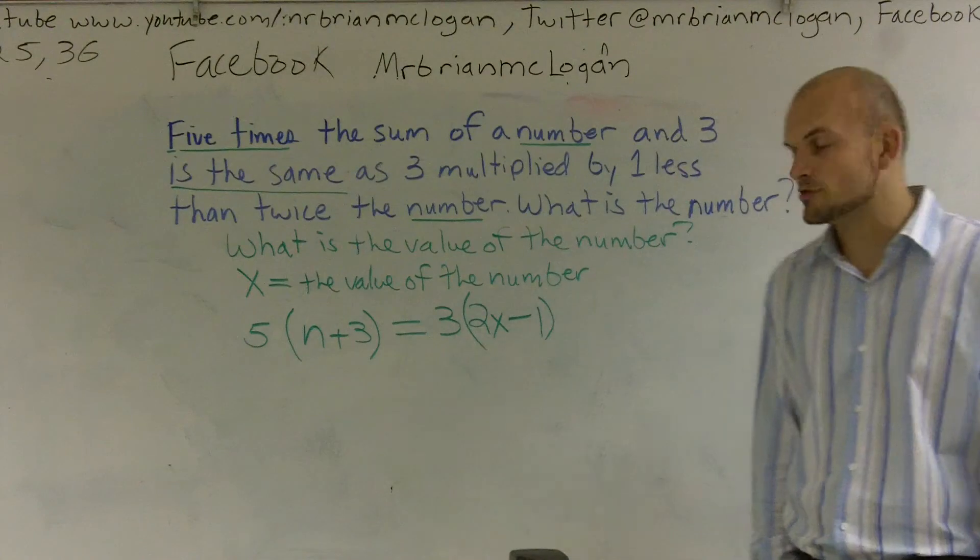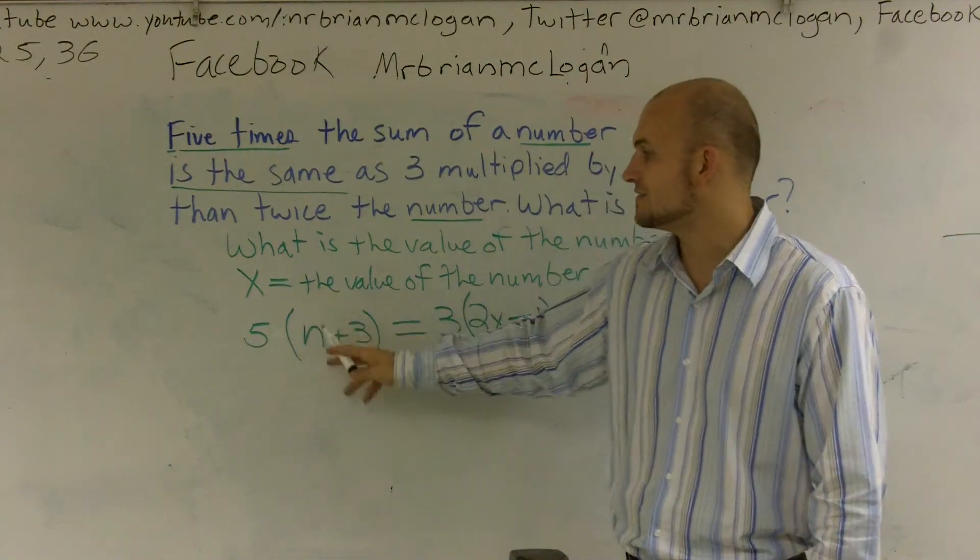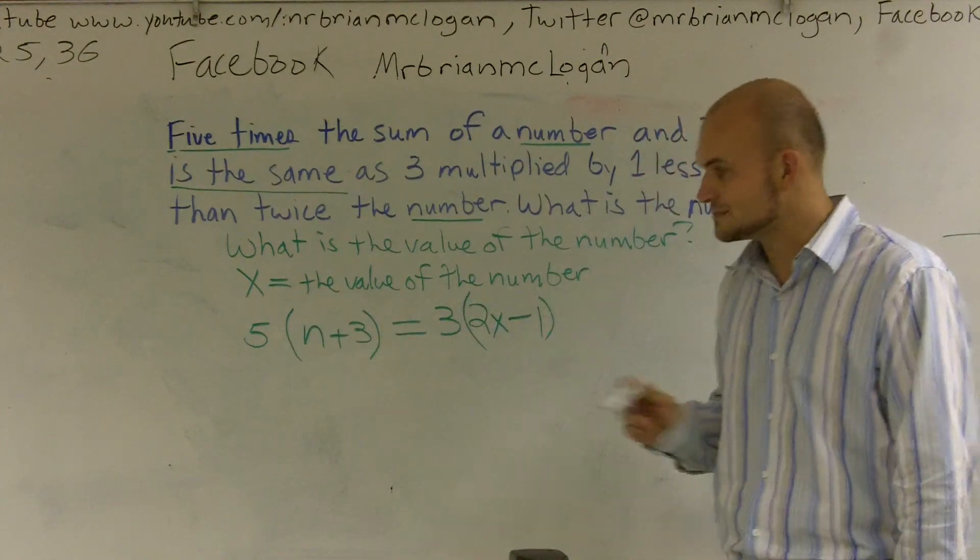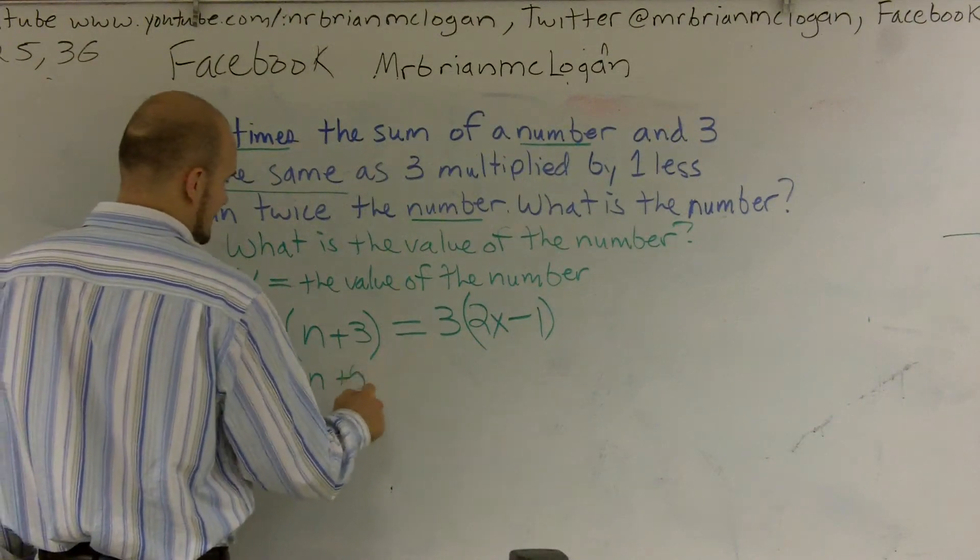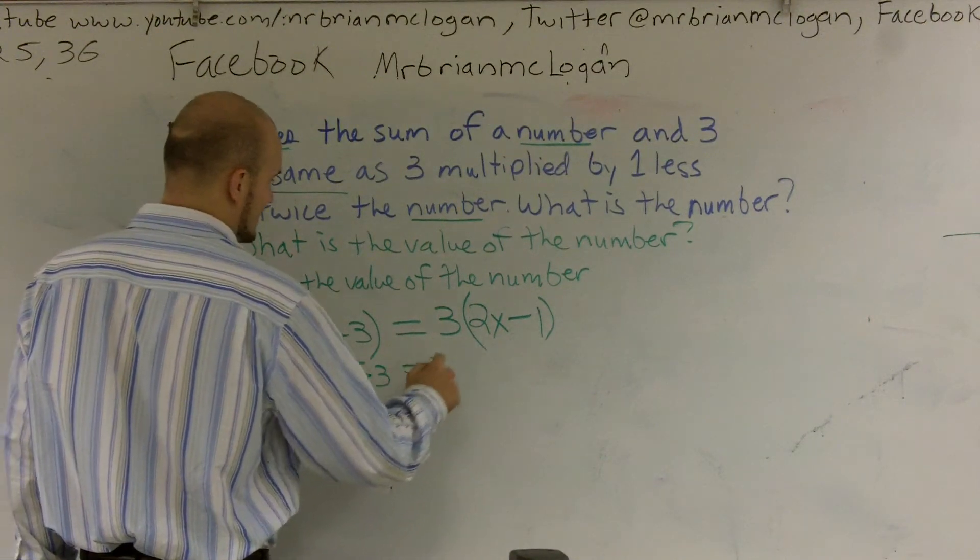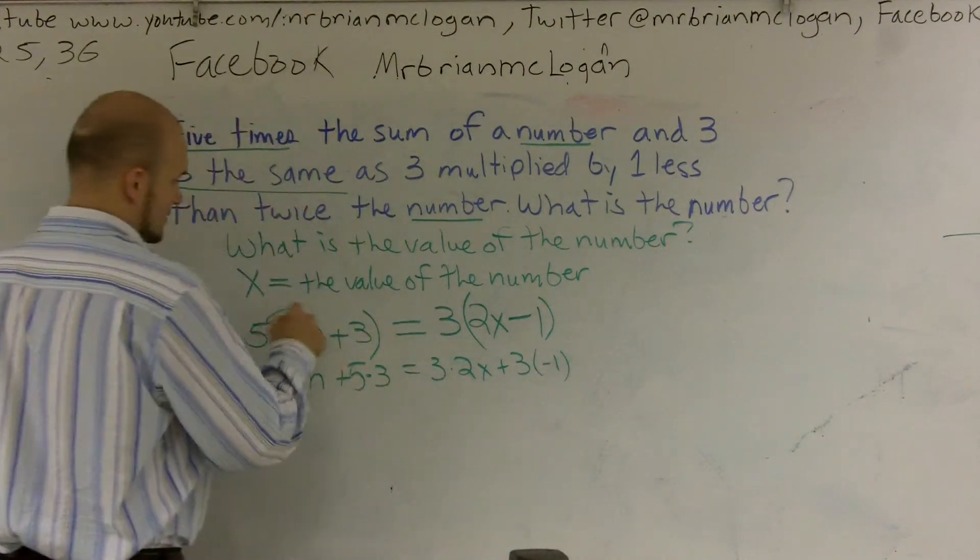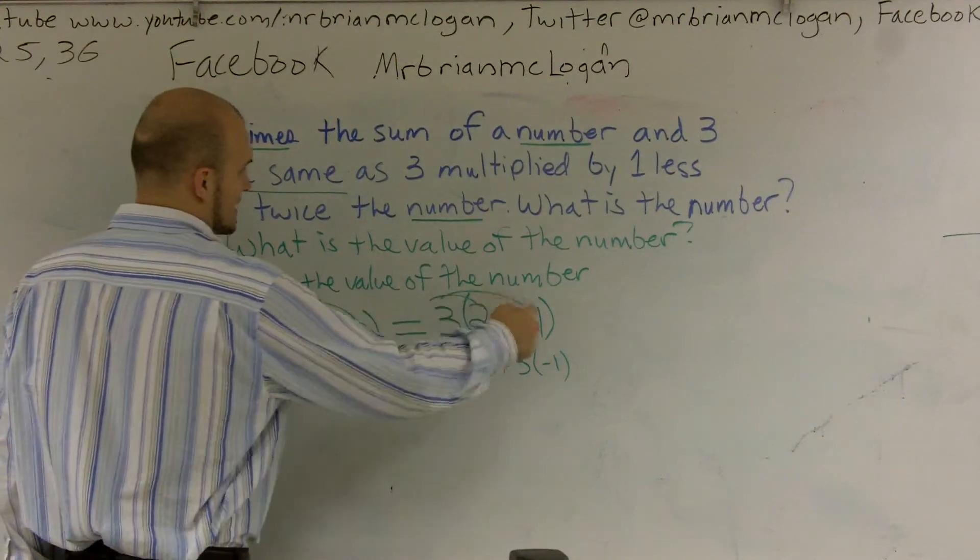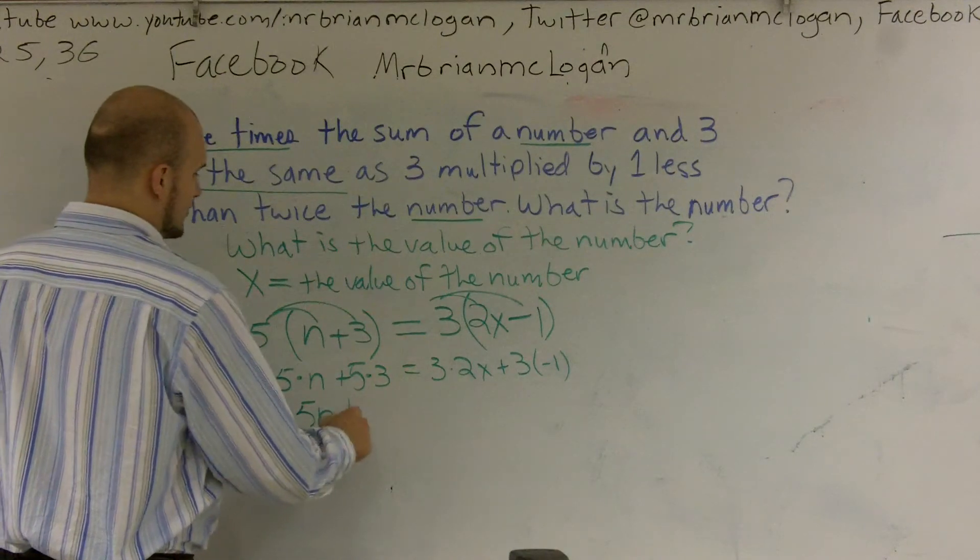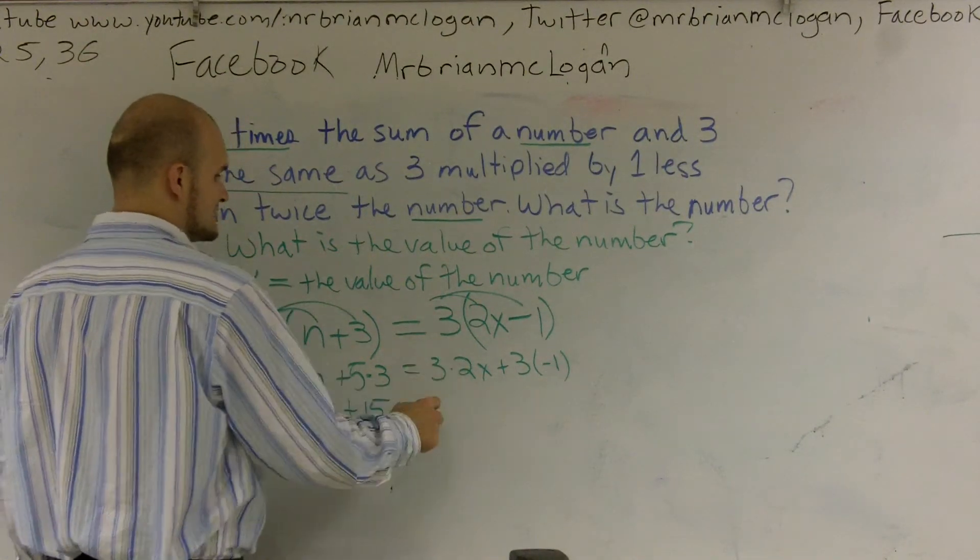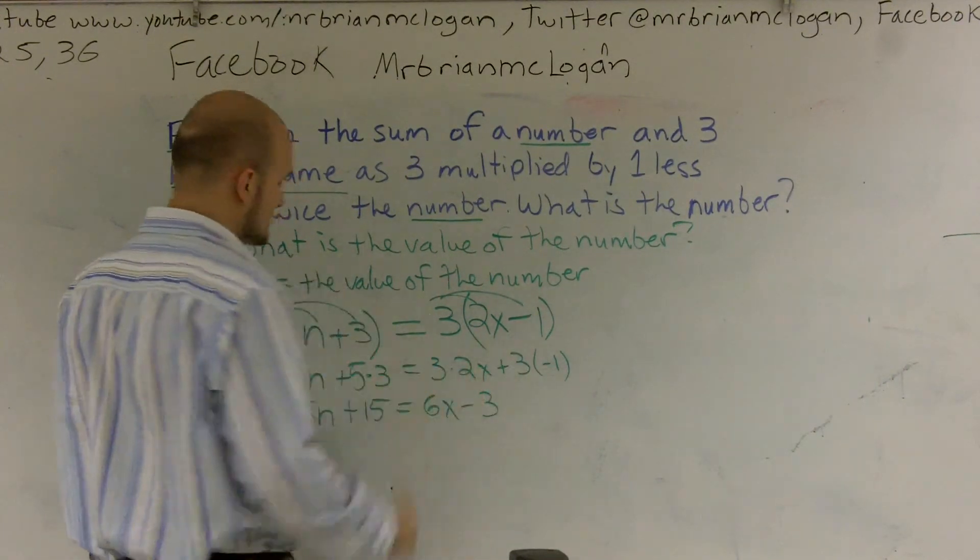So what I'm going to have to do is I'm going to have to do a distributive property. Remember, distributive property tells you to multiply whatever number is outside your parentheses to everything inside of your parentheses. And I'm going to have to do that on the left side and the right side. So I have 5 times x plus 5 times 3 equals 3 times 2x plus 3 times a negative 1. 5 times a variable is just 5x plus 15 equals 3 times 2x is 6x minus 3.